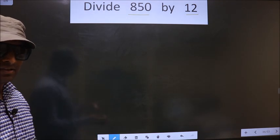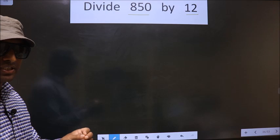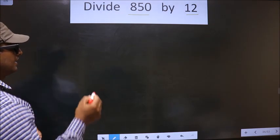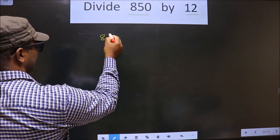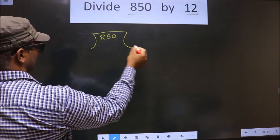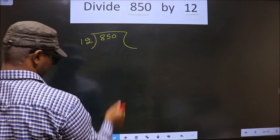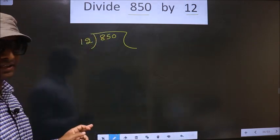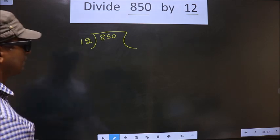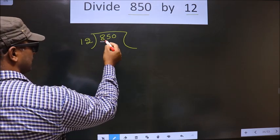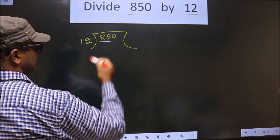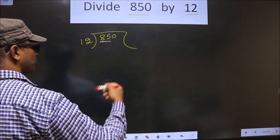I will tell you, but first we should frame it in this way. See, that is 850 divided by 12. Now here, the first number is 8. 8 is smaller than 12, so we should take two numbers, that is 85.